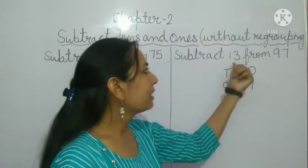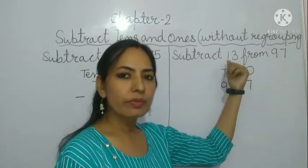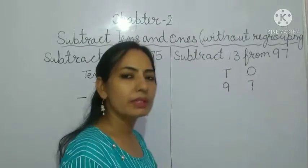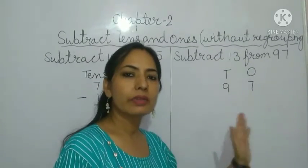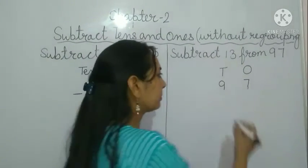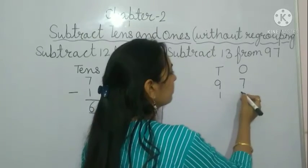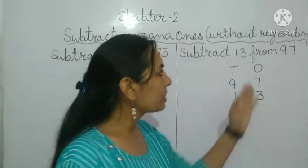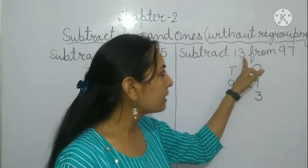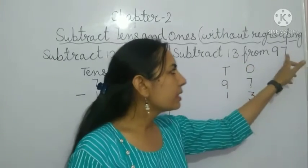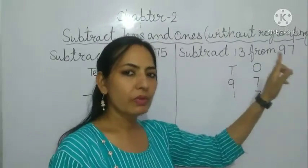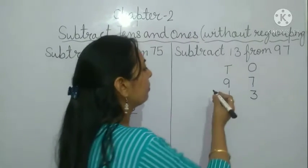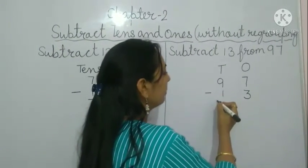Next we have the smaller number, which we write below: 13 means one ten and three ones. We put the sign of minus here.